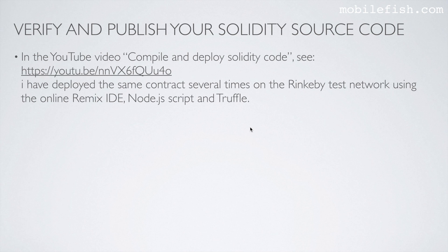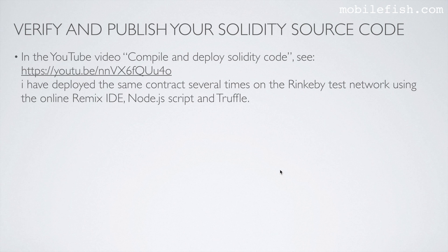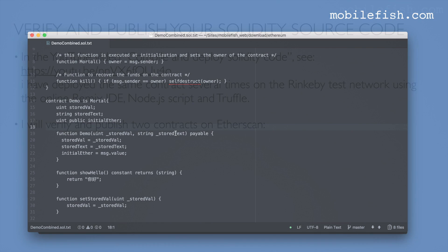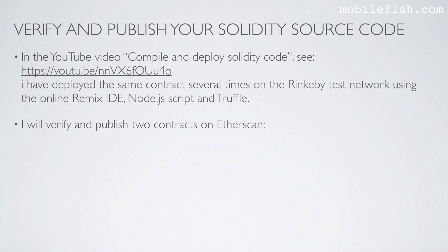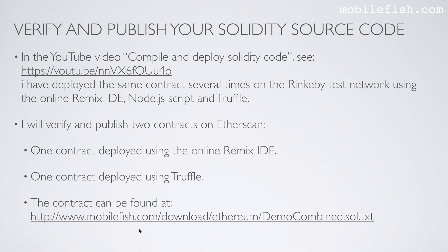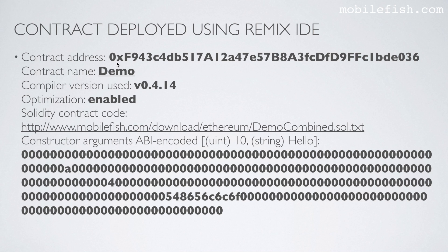In the YouTube video 'Compile and Deploy Solidity Code' I have deployed the same contract several times on the Rinkeby test network using the online Remix IDE, a Node.js script, and Truffle. I will verify and publish two contracts on Etherscan: one deployed using the online Remix IDE and one deployed using Truffle. The contract address, contract name Demo, compiler version, and enabled optimization are noted. The constructor arguments were 10 and 'hello', and I demonstrated how the constructor arguments ABI encoded value is created.